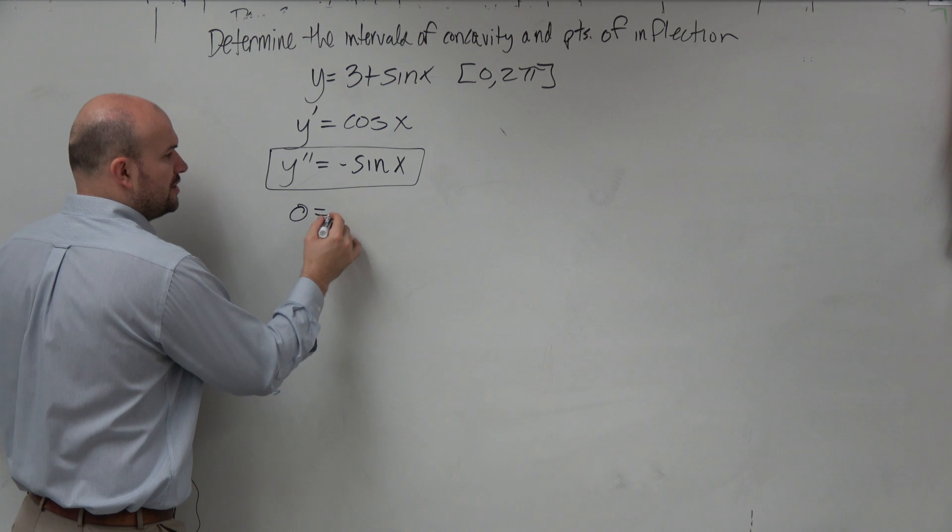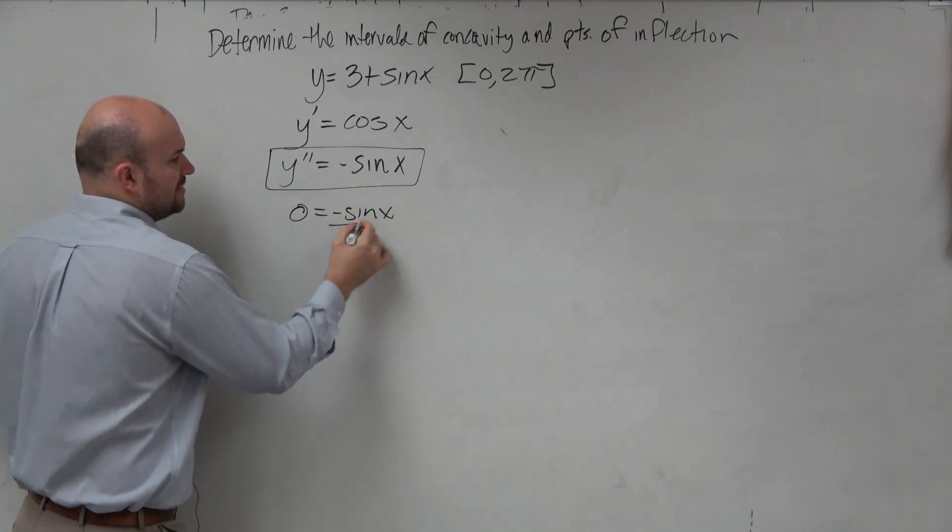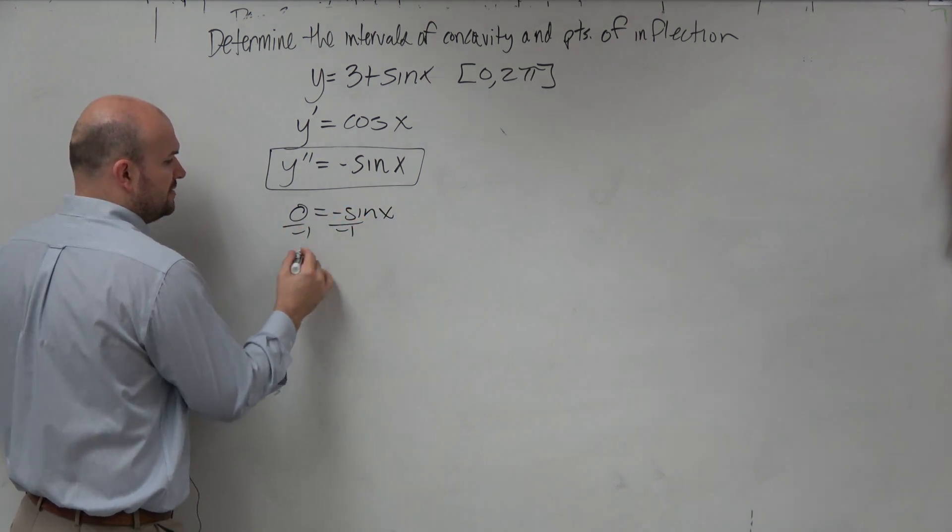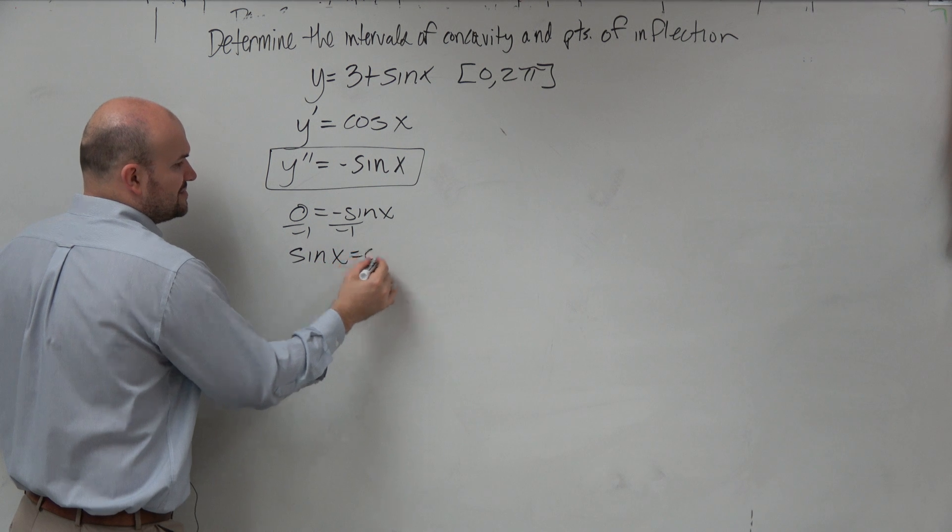But to solve for this, we are going to take 0 equals negative sine of x. Divide by negative 1, divide by negative 1. Sine of x is equal to 0.